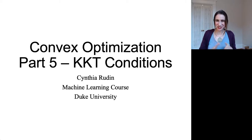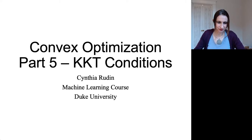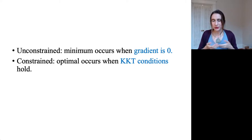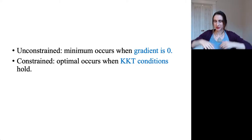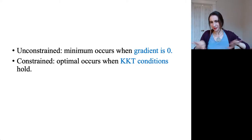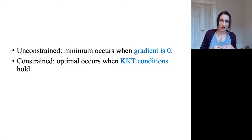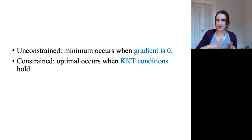Okay, the KKT conditions — super useful, super important, super cool. When you're doing unconstrained minimization with convex differentiable functions, you'd take a gradient and set it equal to zero, solve for the minimum, and be done. That's almost exactly the same as what you do for constrained convex optimization problems. Instead of just saying set the gradient equal to zero, you check the KKT conditions.